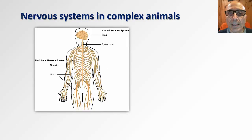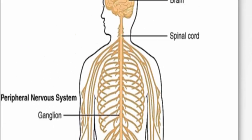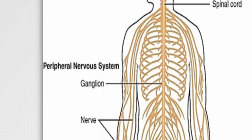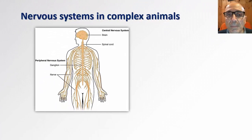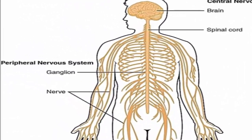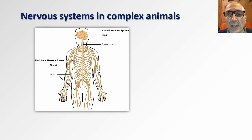In more complex animals such as those with vertebral columns like humans, the nervous system consists of two main components, the central nervous system and the peripheral nervous system. The central nervous system consists of the brain and spinal cord. The central nervous system communicates with other body parts via nerves and ganglia which collectively are known as the peripheral nervous system.